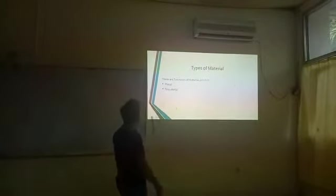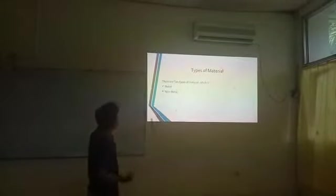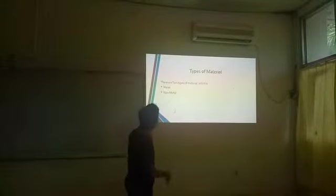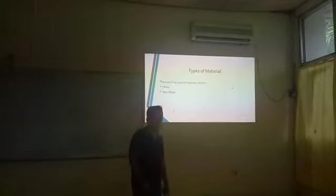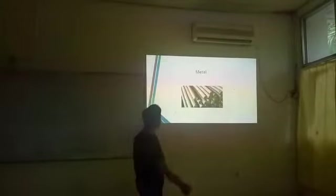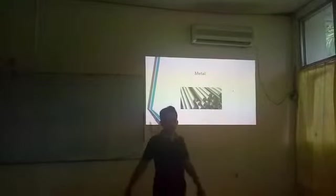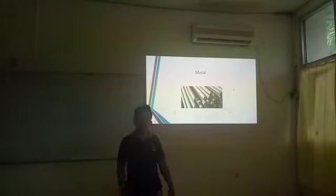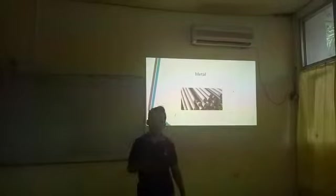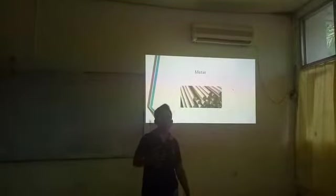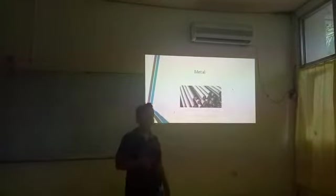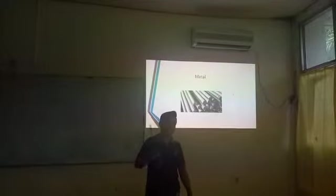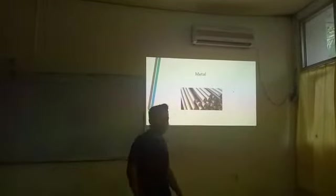For material, there are two types of material, which is metal and non-metal. For metal, let's use iron, because iron is conceptual, or simple and sturdy. It is the material for columns and beams.